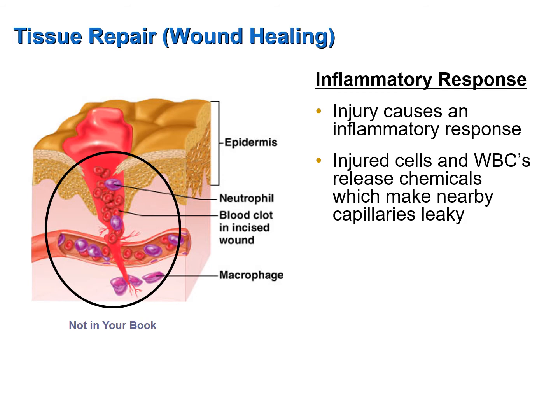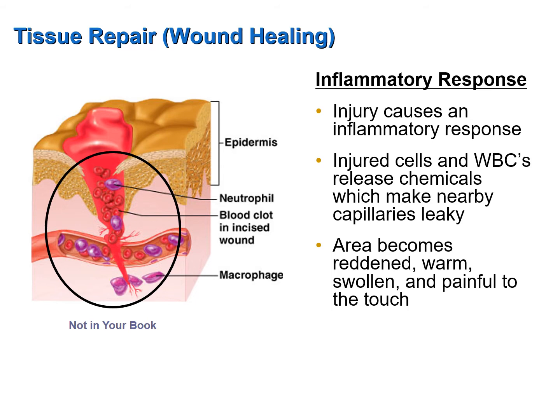Those chemicals cause nearby capillaries to become leaky — that is, very permeable — and they allow most of the contents of blood to move out of the capillaries into the surrounding tissues in the area of the wound. As this happens, the area becomes reddened, warm to the touch, and swollen. Pain receptors are also stimulated by those chemicals released by the injured cells, so the area is painful to the touch as well.